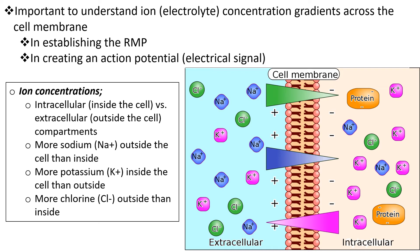To understand how the resting membrane potential is created, as well as how the action potential is created when a neuron is stimulated, we first have to review the ion and electrolyte concentration gradients that exist across the cell membrane. The space inside cells is known as the intracellular compartment; the space outside is the extracellular compartment, separated by the phospholipid bilayer. We have two general categories of ions: positively charged cations and negatively charged anions. For example, chloride is negatively charged — an anion.